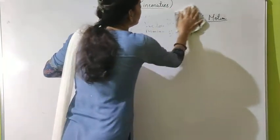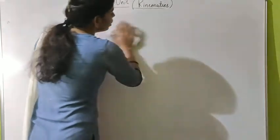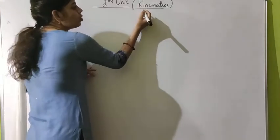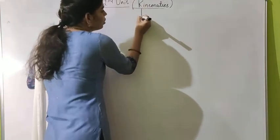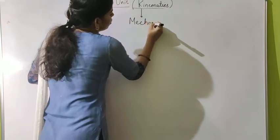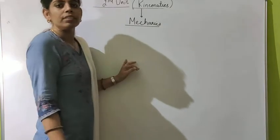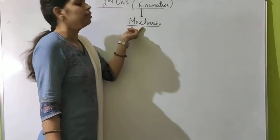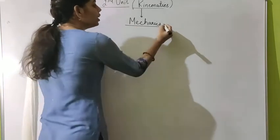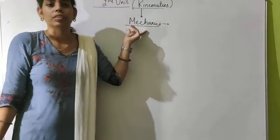Our unit is kinematics, so let us move towards kinematics. In kinematics, we will start our chapter with the branch of physics that is known as mechanics. Physics has sub-branches, and mechanics is a sub-branch of physics.